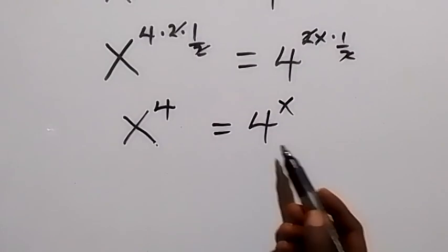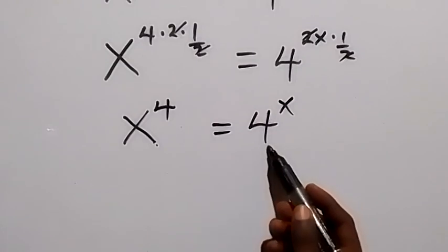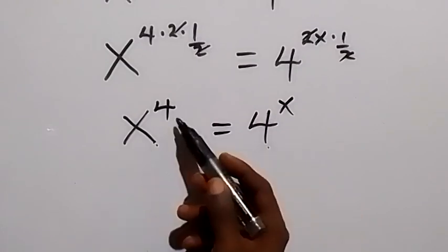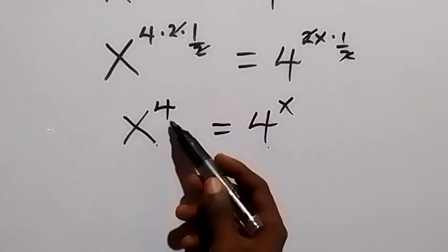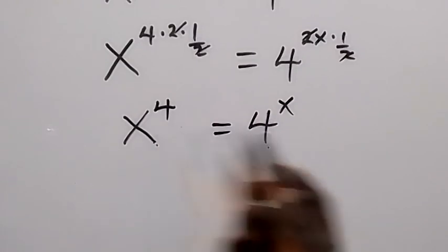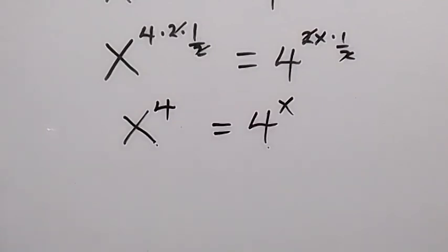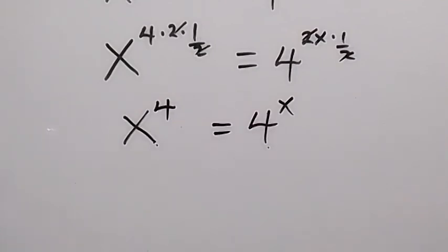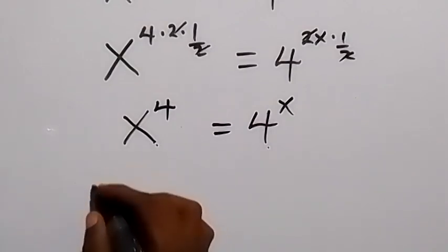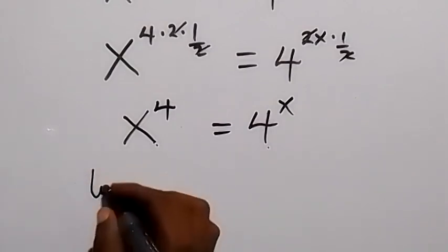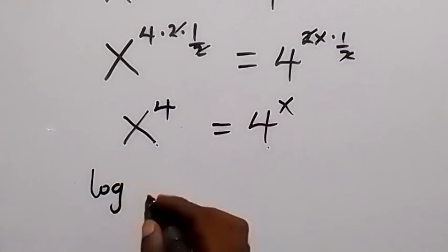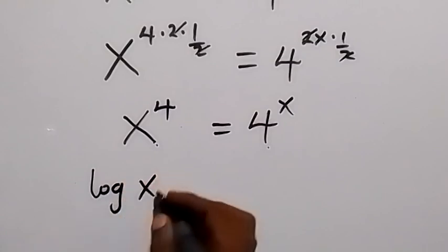When we compare this, we can see x as the base on the left, 4 as the base on the right, 4 as the power on the left, and x as the power on the right. So we can deduce and conclude that x equals 4. But we can still take the log on both sides to verify.